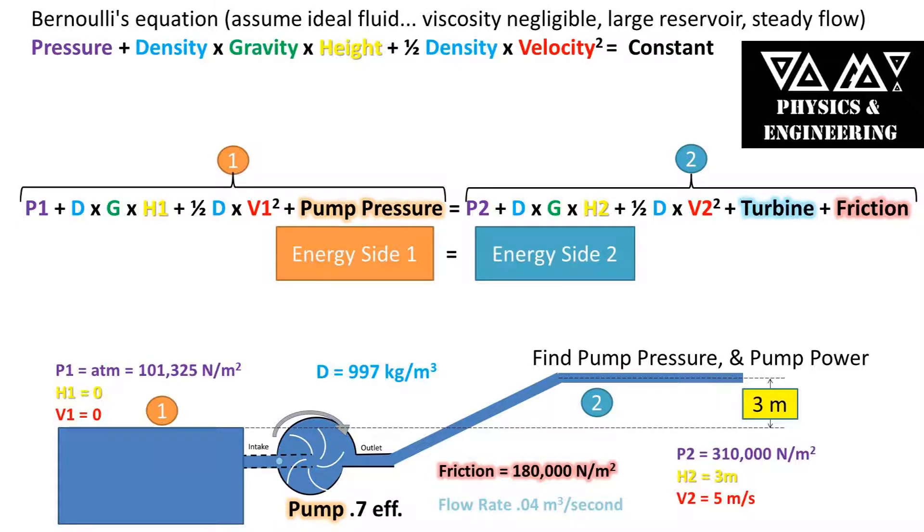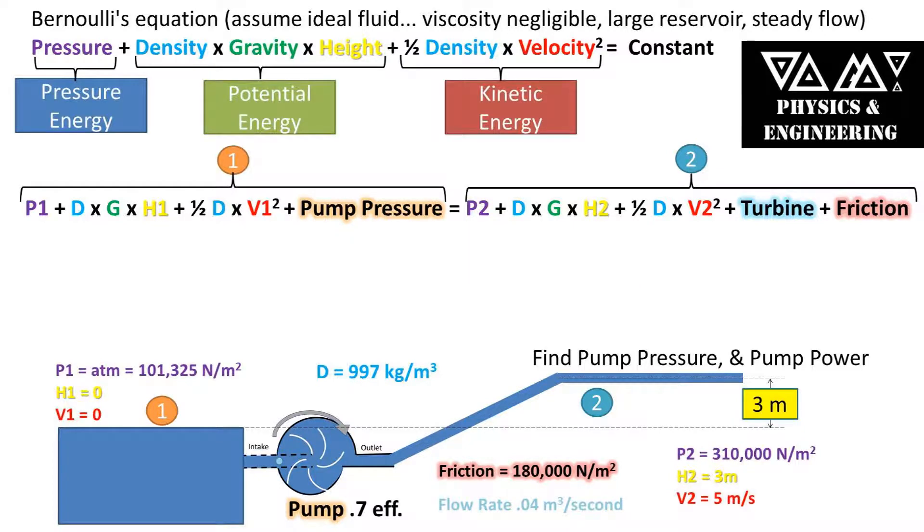To solve this problem we'll be using a variant of the Bernoulli equation that takes into account if there is a pump, a turbine, and friction in the problem. Recall that the Bernoulli equation only works for an ideal fluid. The Bernoulli equation is simply adding up the pressure energy plus the potential energy plus the kinetic energy to get the total energy in the fluid at a given point.